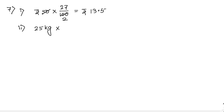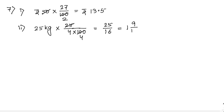Number two: 6 whole 1 by 4 percent of 25 kg. Convert the percentage: 6 whole 1 by 4 equals 25 by 4. So 25 kg into 25 by 4 by 100 simplifies to 25 by 16, giving 1 whole 9 by 16 kg as the answer.